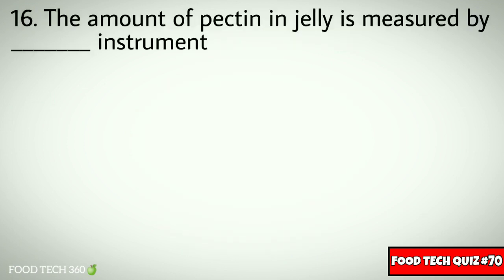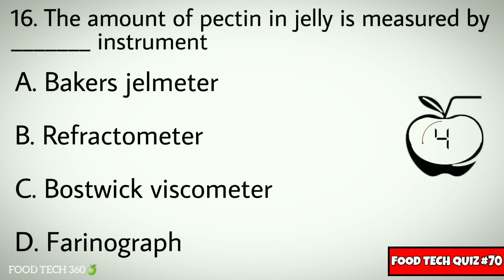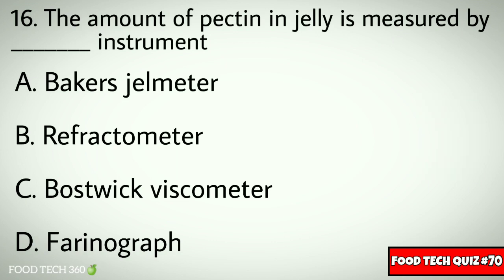Q16. The amount of pectin in jelly is measured by which instrument? Options: A. Baker's gel meter, B. Refractometer, C. Bostwick viscometer, D. Farinograph. Correct answer: A. Baker's gel meter.